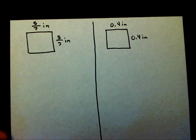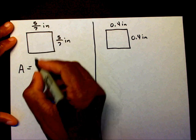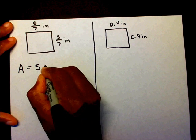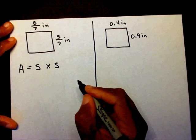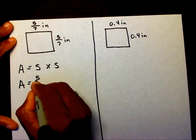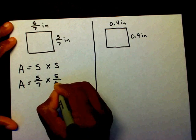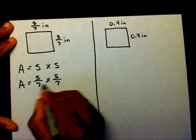All right. We want to find the area of the square. Since it's a square, we're going to use the formula s times s. So A equals one side is five-sevenths, times the other side is five-sevenths. And the reason why the two sides are the same is because this is a square.